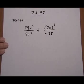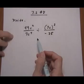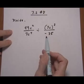7.2 number 8. Divide the two rational expressions. First we're going to turn it to multiply and then flip the second one.